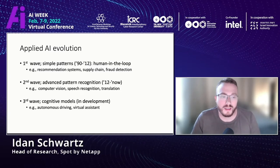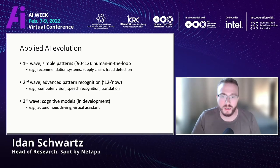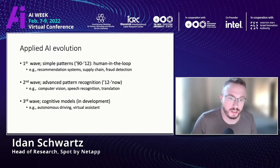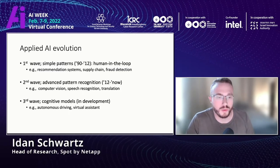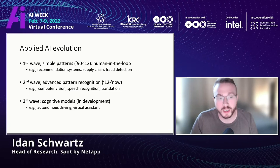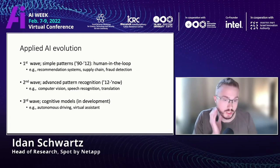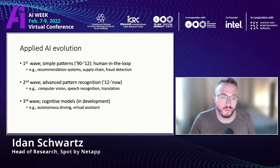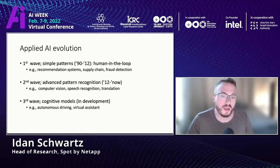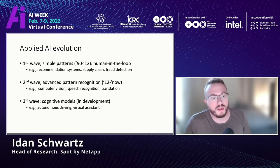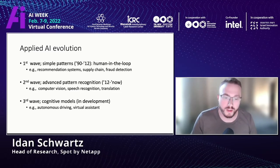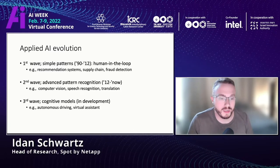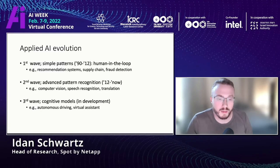The second wave we've seen in the last 10 years is better pattern recognition. Since AlexNet emerged, we have better abilities in computer vision, speech recognition, and translation — all improved a lot based on better pattern recognition, but they still require a human. The third wave, still under development, is the cognitive model, and that is what we'll talk about in this talk.